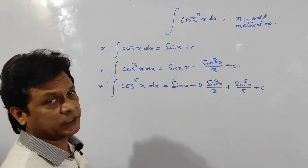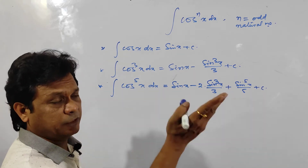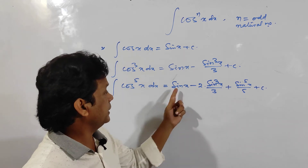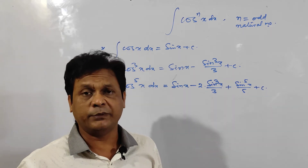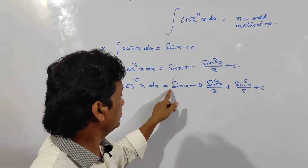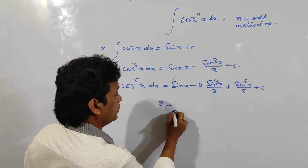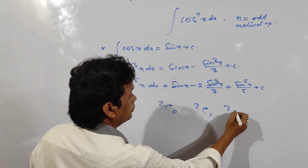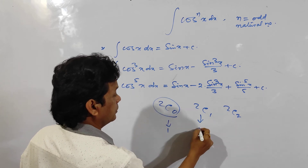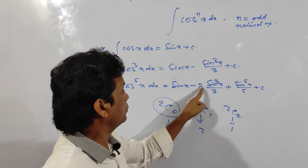The signs alternate: positive, negative, positive, negative, positive, and so on. For the coefficients, when there are 3 terms, use (3-1) = 2, so the combinations are 2C0, 2C1, 2C2, which give 1, 2, 1. When there are 2 terms, use (2-1) = 1, so 1C0 and 1C1, which are both 1.